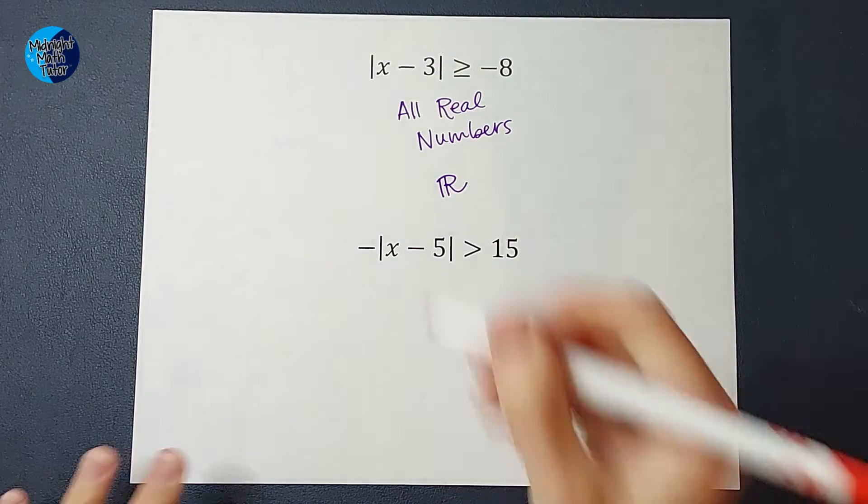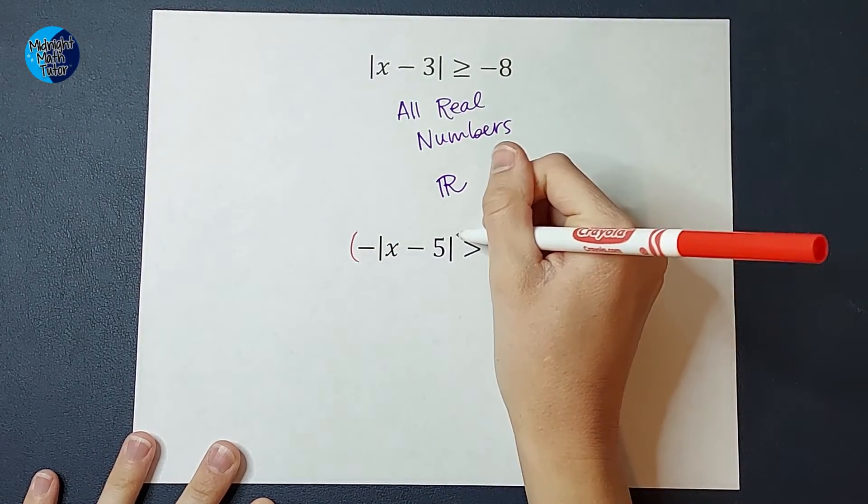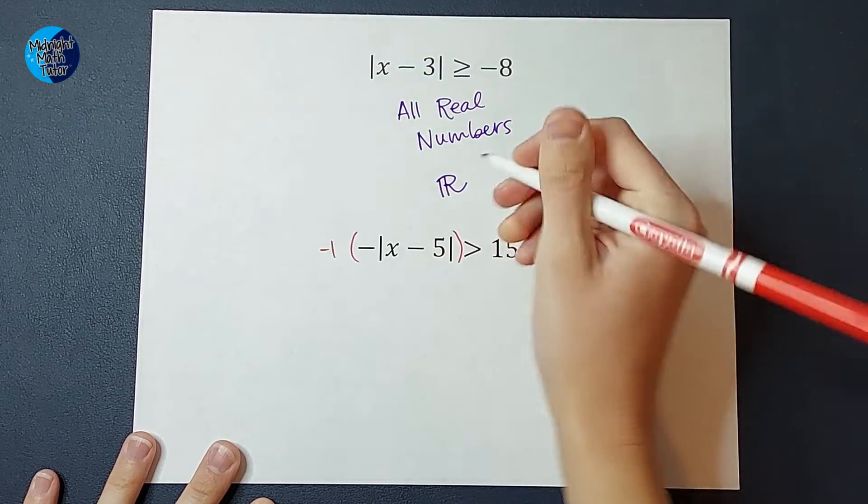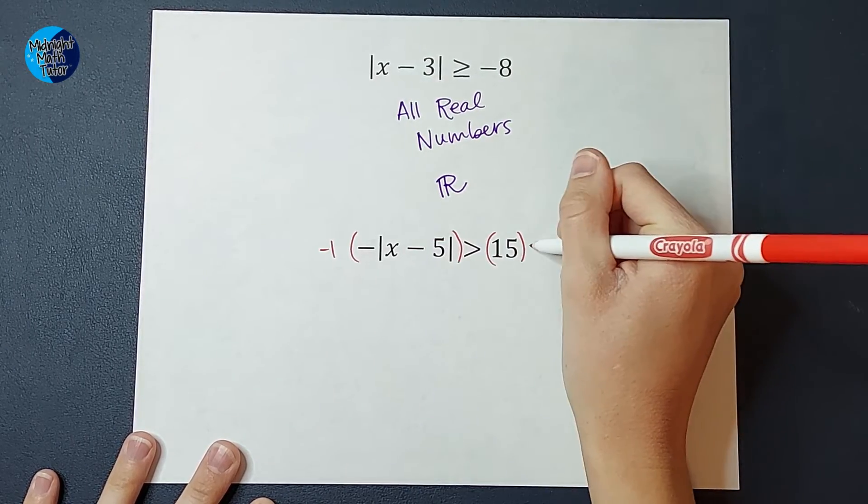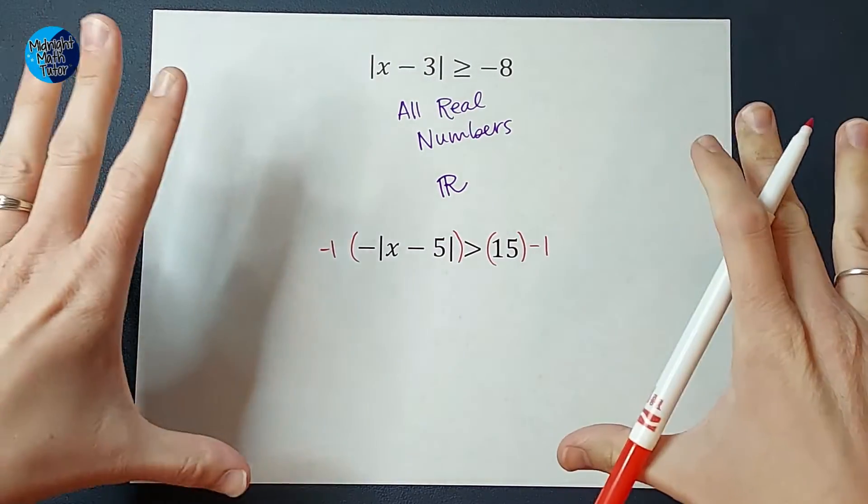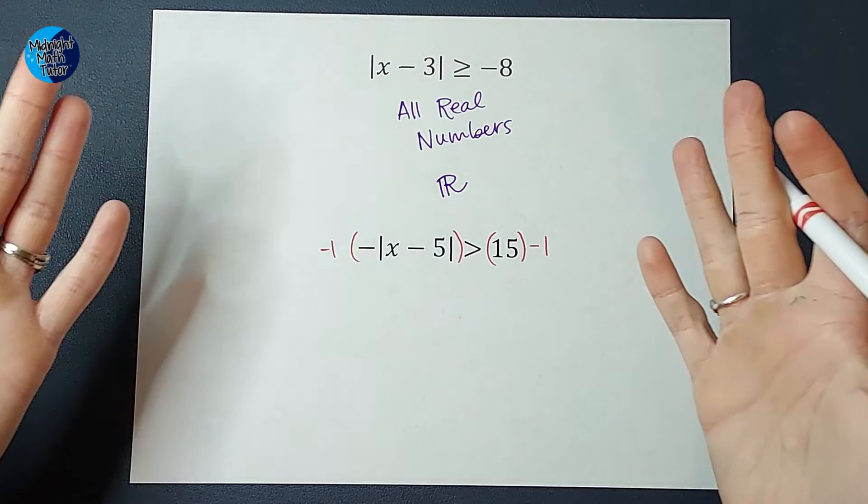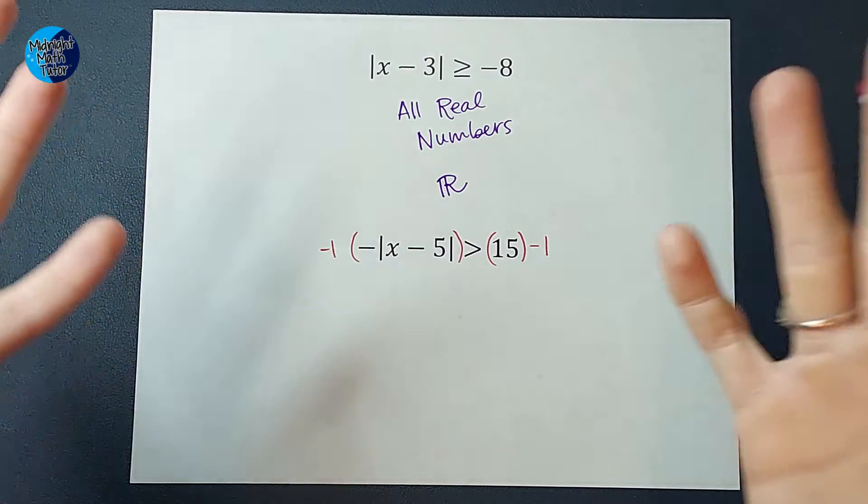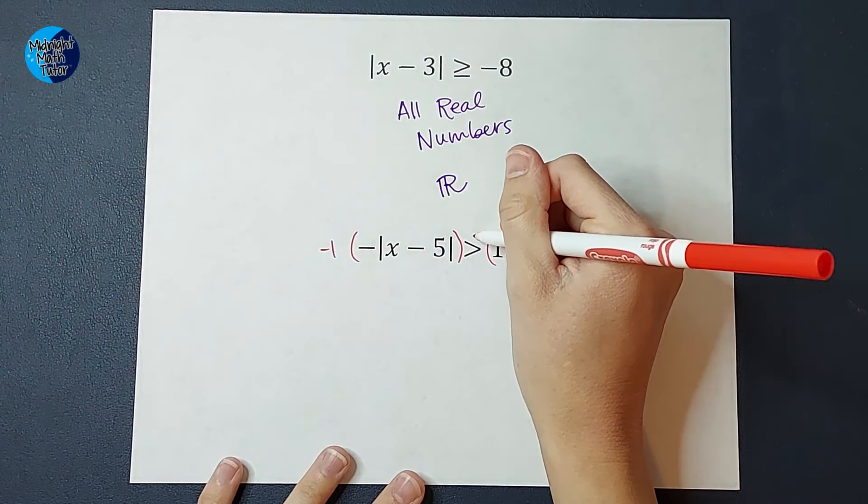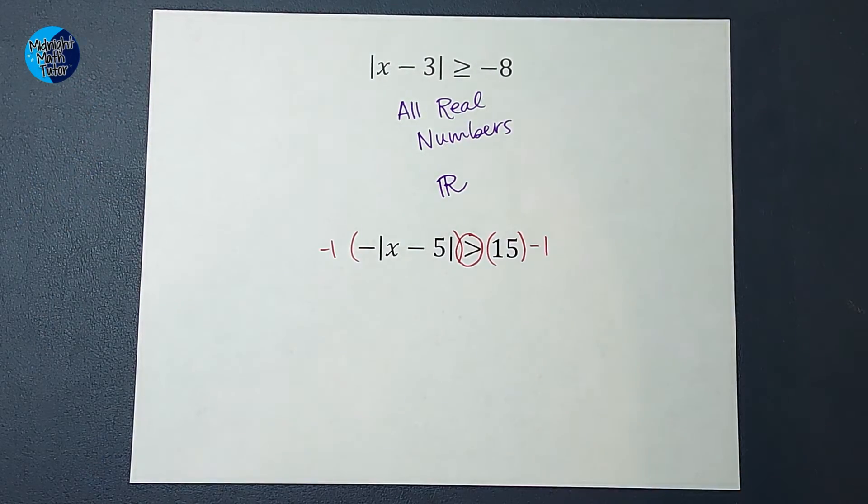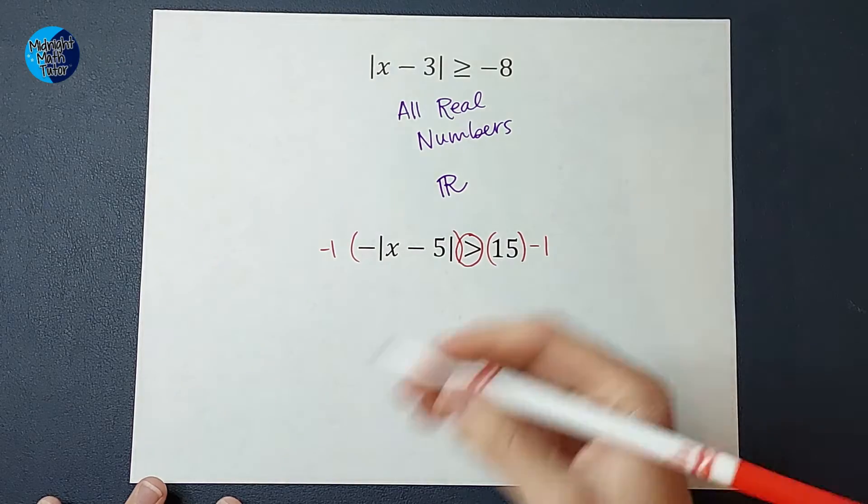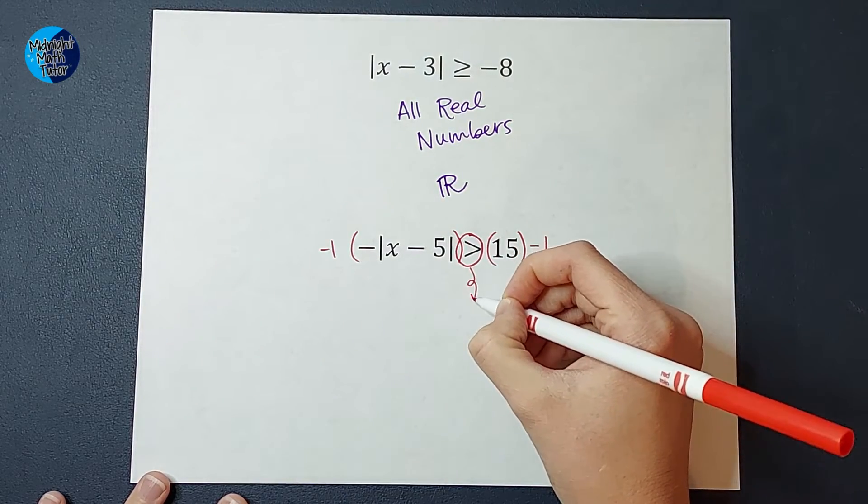So I can multiply both sides by a negative one. Also, alarms should be going off in your head because what do we do with inequalities whenever we multiply or divide by a negative, we flip this sign, right? So I always like to circle it to remind myself that I'm going to be flipping that sign.